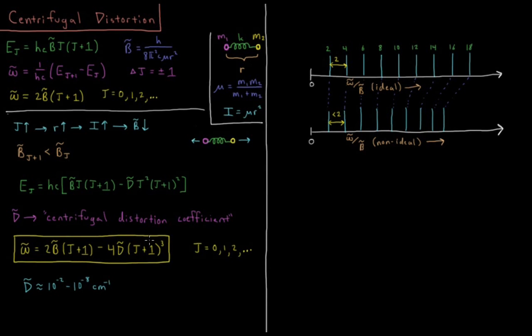Now luckily for us, this effect is highly exaggerated in my hand-drawn graph. Typically the values of B bar are somewhere between 0.1 and 10 wavenumbers, whereas the value of D bar is somewhere between 10 to the minus 2 and 10 to the minus 8 wavenumbers. So this might matter in the 4th, 5th, 6th, 7th, or even the 8th significant figure as far as where the centrifugal distortion coefficient comes in.